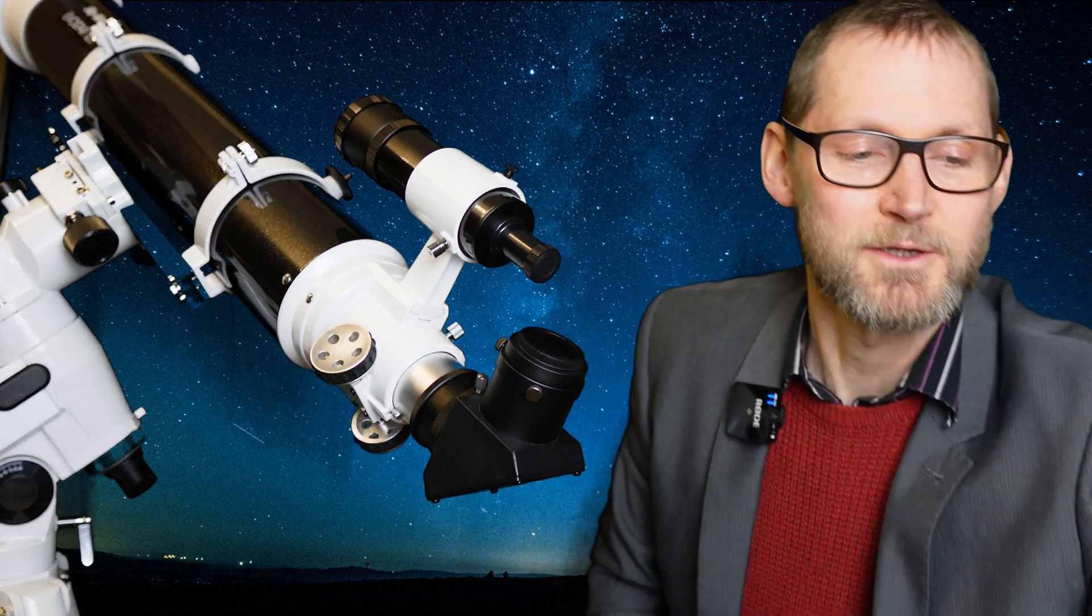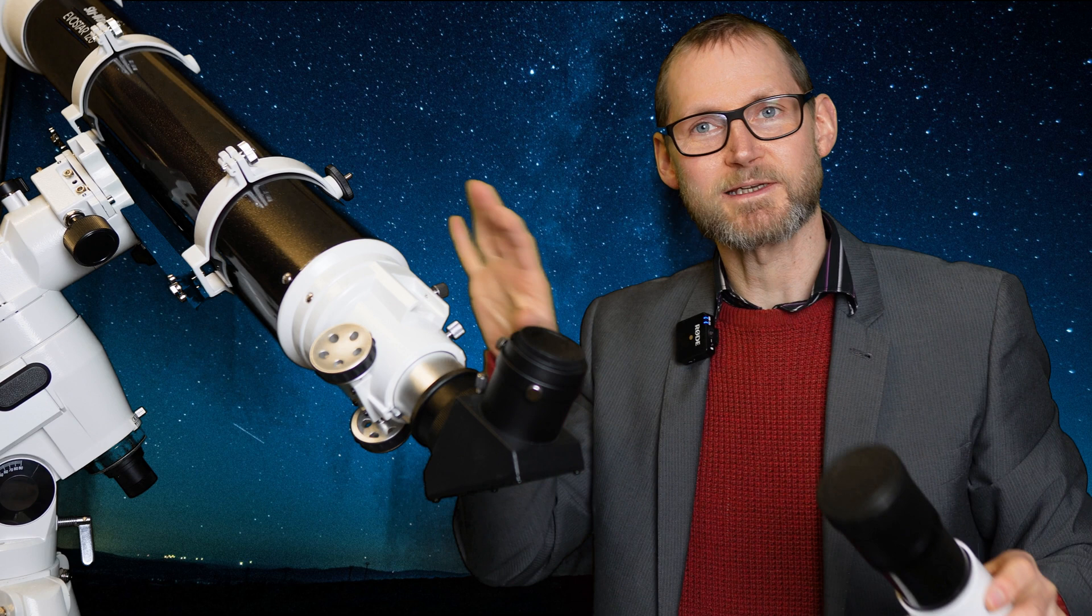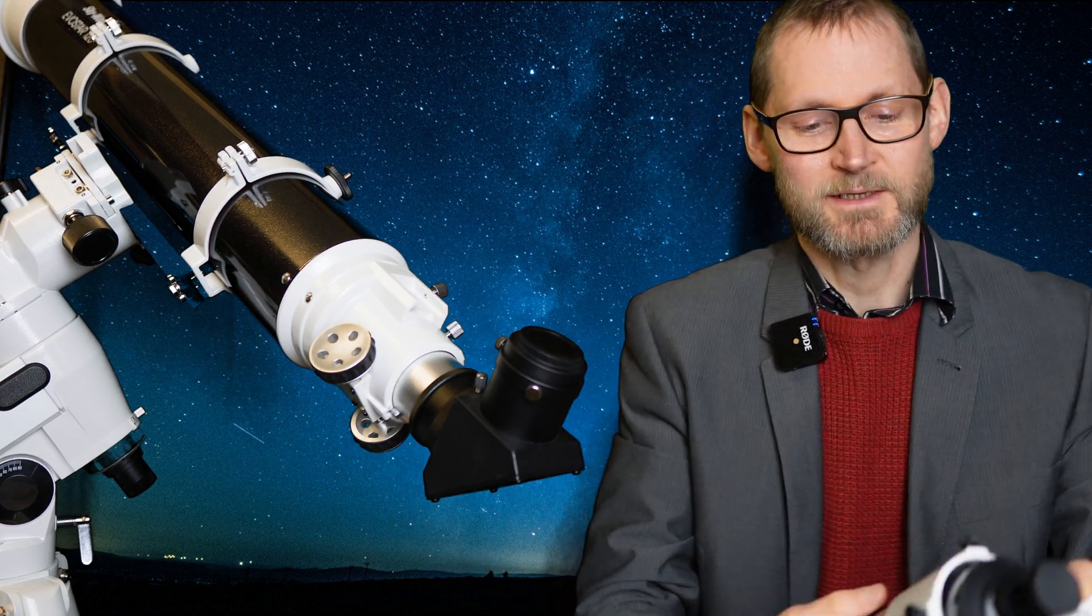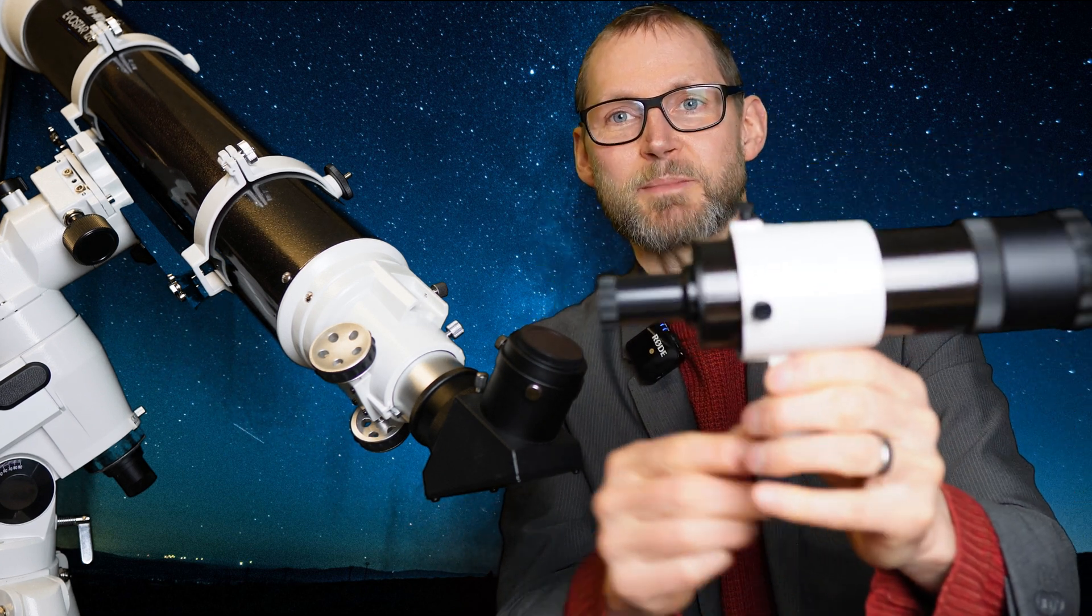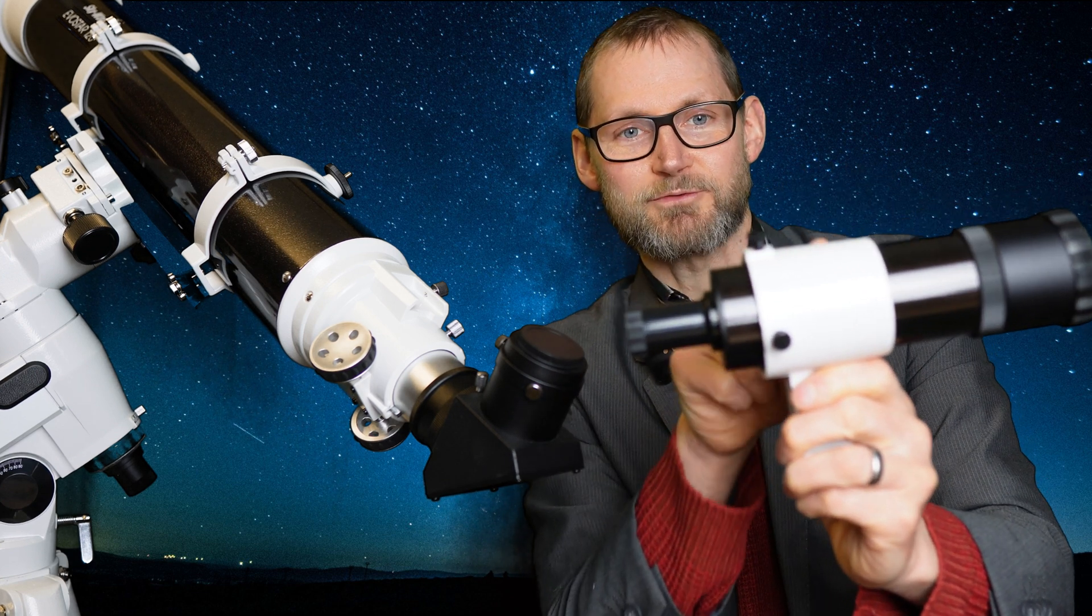So the first thing you need to do when you get your telescope out the box and you're setting it up in terms of the finder is to install it. Now if it's an optical finder like this it'll have a stalk, there'll be a rubber o-ring inside there that you just need to slide on and pop it in a groove.